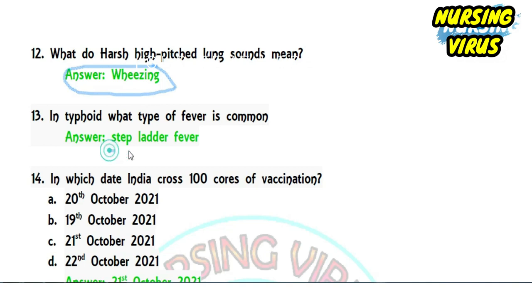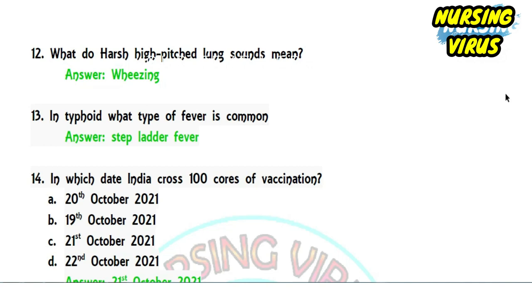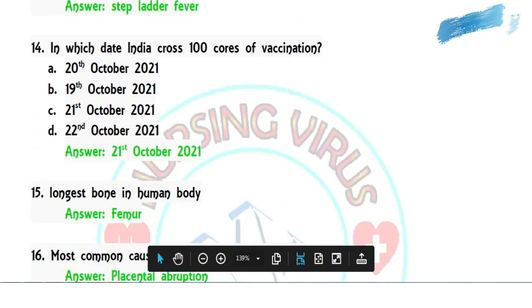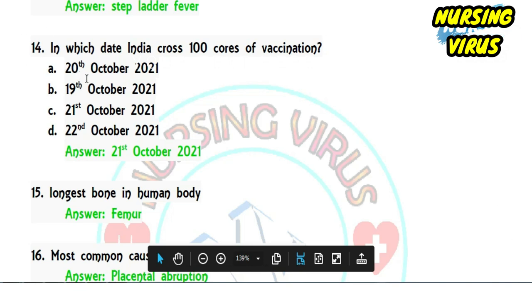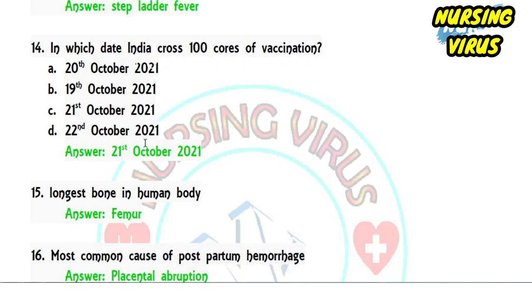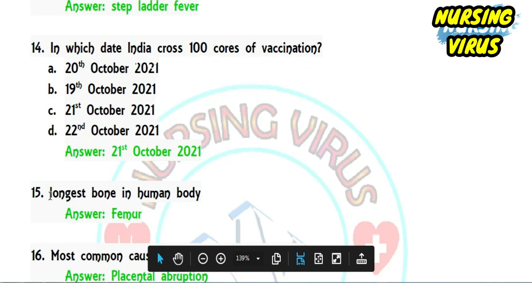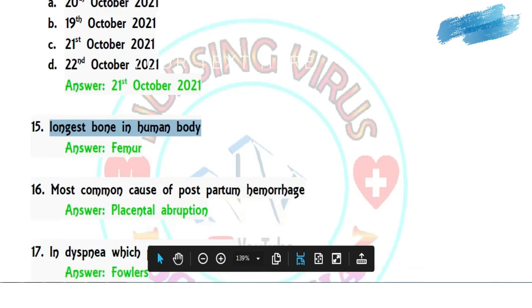Question 13: in typhoid, what kind of fever is commonly seen? The answer is step-ladder fever, which is very common in typhoid. Question 14: on which date did India cross 100 crore vaccinations? Options included the 19th, 20th, 21st, and 22nd of October. The correct answer is 21st October, when India reached 100 crore vaccinations. Question 15: the longest bone in the human body is the femur.